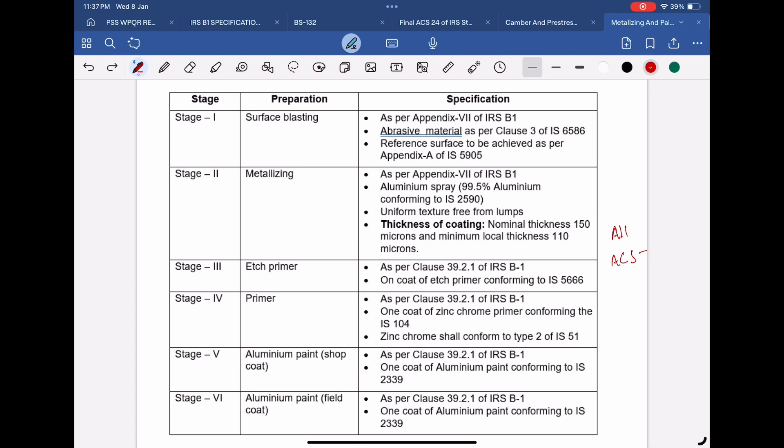As per Annexure 7 of IRS B1, for Stage 1 that is for surface blasting, compressed air blasting or centrifugal blasting with a suitable abrasive material in accordance with Clause 3 of IS 6586 should be used. The achieved surface should be comparable in roughness with a reference surface of Appendix A of IS 5905.